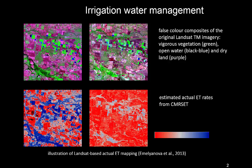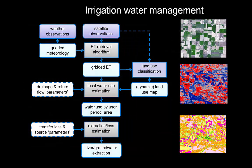We need to know who is using the water and what they are using it for — whether it's growing crop or just evaporating from water storage. So we turn this into maps showing in red areas with very little evapotranspiration and in blue areas with high evapotranspiration. We combine weather observations and satellite observations to estimate evapotranspiration, and then combine that with a land use classification to identify where irrigation areas are.